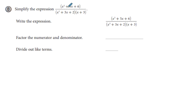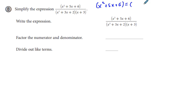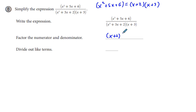Now, Part B: simplify the expression. The prerequisite skill here is factoring. We write out the expression and factor the numerator and denominator. Taking the numerator x squared plus 5x plus 6: we need two numbers that multiply to 6 and add to 5, which is 2 and 3. So the numerator factors to x plus 2 times x plus 3.